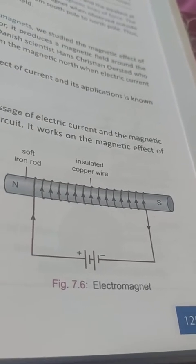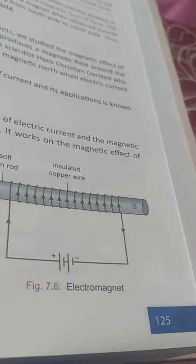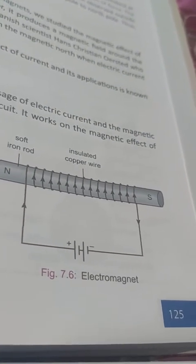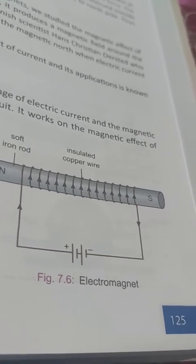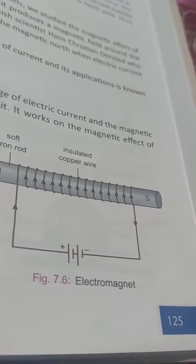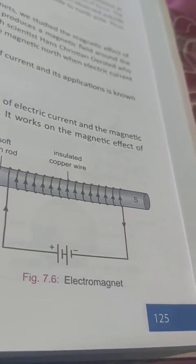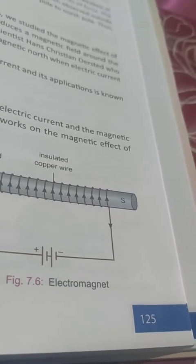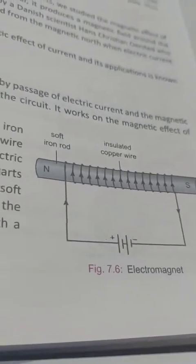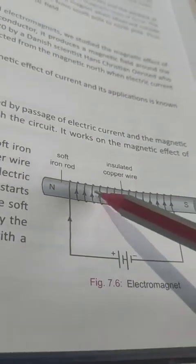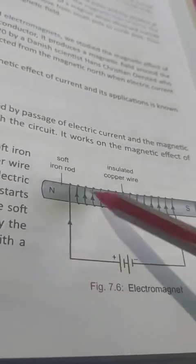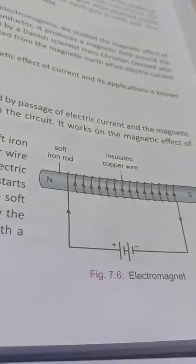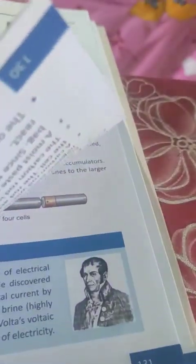When current is passed through the dry cell, the coil behaves like a magnet. The magnetic polarities at the ends of the electromagnet depend on the direction of current in its coil, determined by the clock rule. The north and south polarities — N and S — depend on the direction of flow of current. The insulated wire is wound around a soft iron rod.